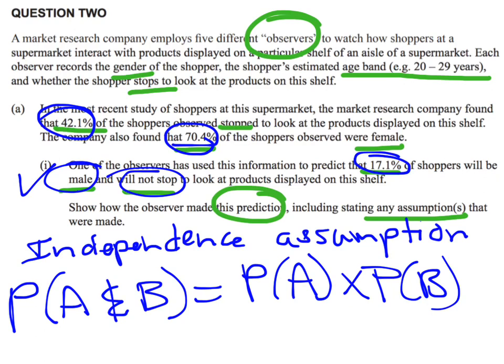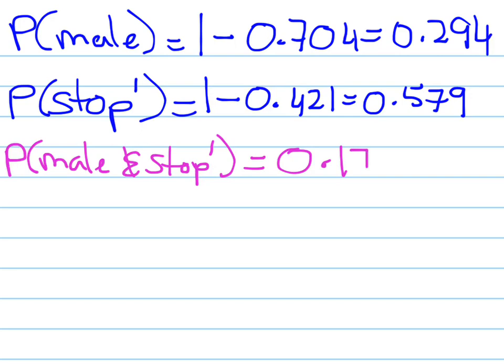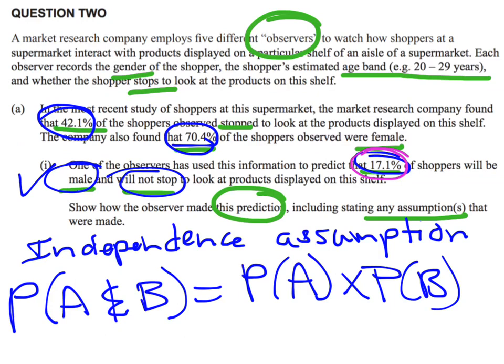Now I need to look at that 17.1% and say, they predicted that 17.1% of them will be male and not stop. Let's have a look at our information. Do we agree with that? So they've talked about the probability they are male and did not stop, and they've said that their probability is 0.171.